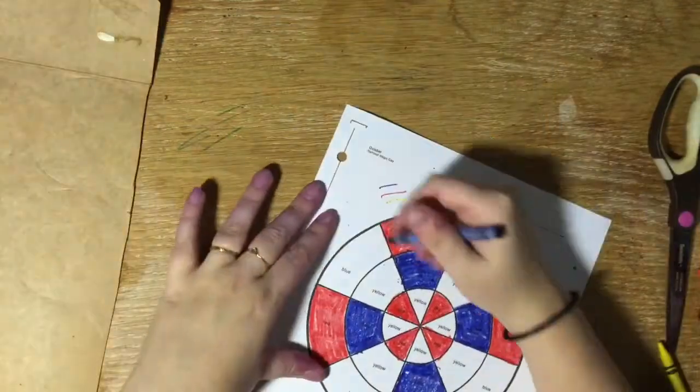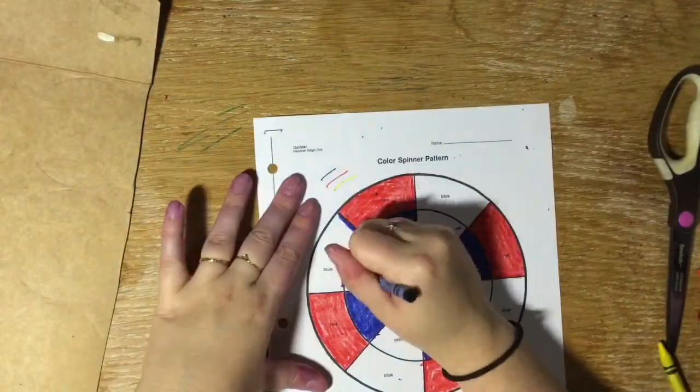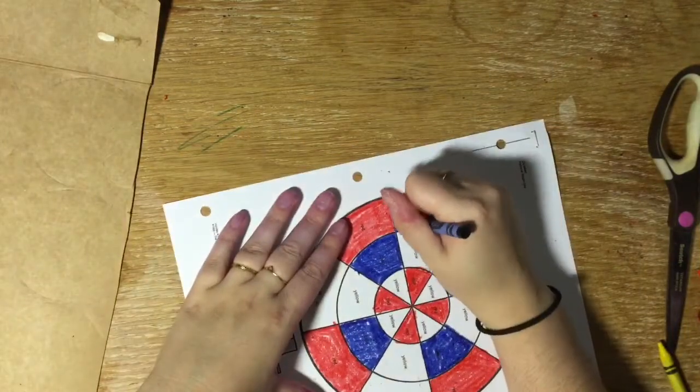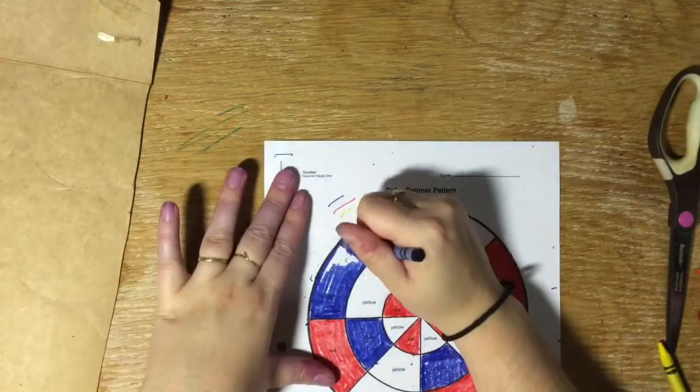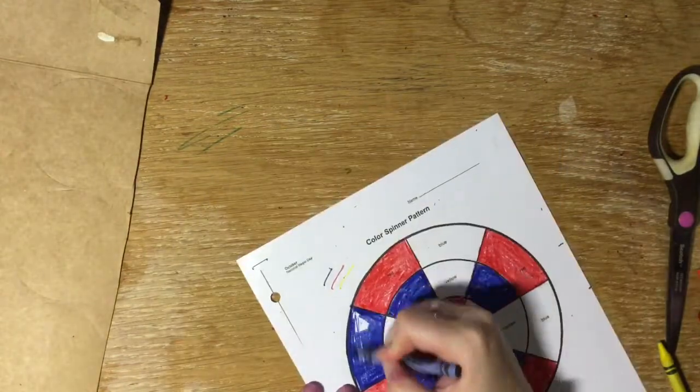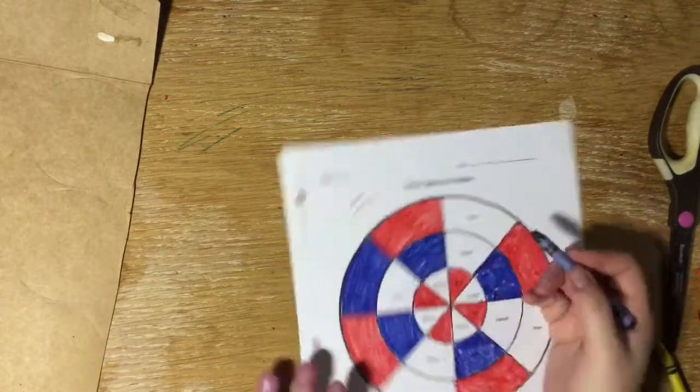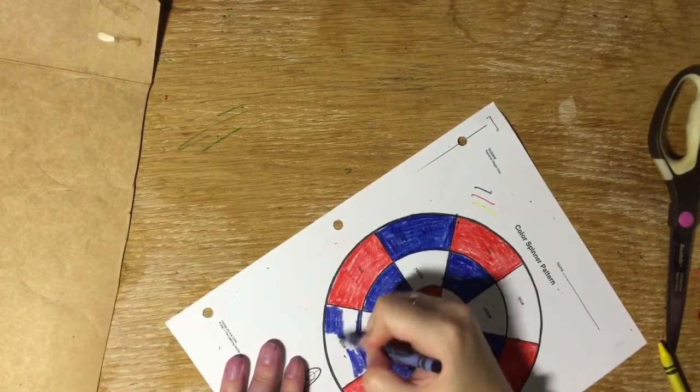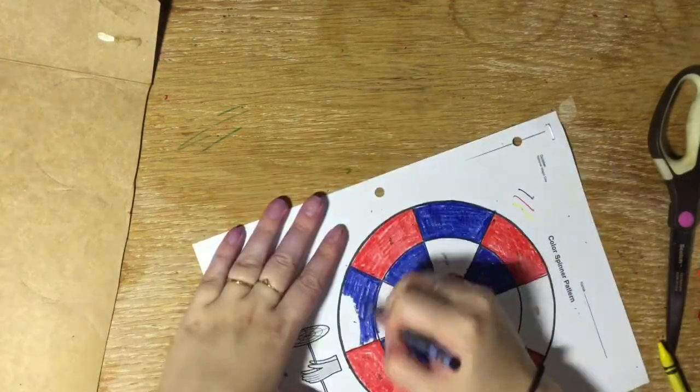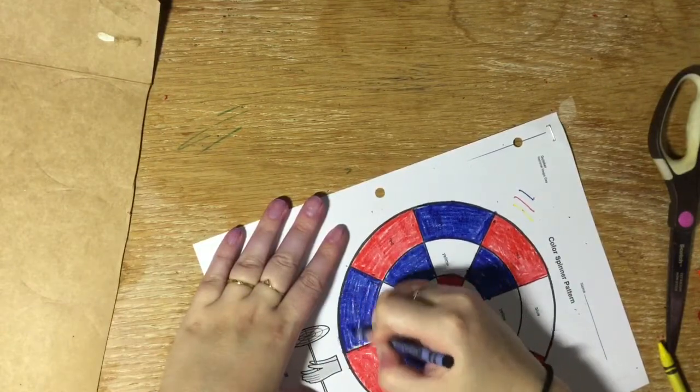This is the part of the video where you probably are expecting music. If Miss Leatherwood was better at making videos, we would have some kind of really cool music to listen to while you watch me color this in. So instead, I'm gonna sing to you. La la la la la. I'm coloring in a color spinner. Now don't be letting this girl know how amazing my singing voice is. She'll be super jealous.